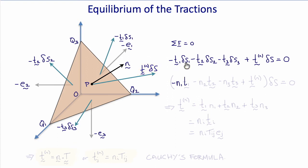And then knowing that delta s1 is n1 delta s, delta s2 is n2 delta s, delta s3 is n3 delta s, we get minus n1 t1 minus n2 t2 minus n3 t3 plus tn times delta s equals zero, which means that tn must equal t1 times n1 plus t2 times n2 plus t3 times n3.